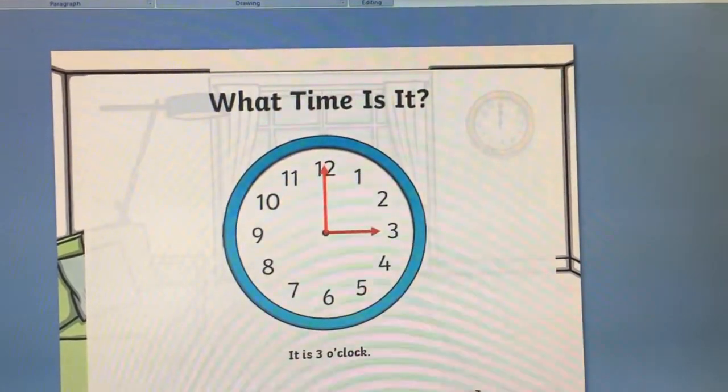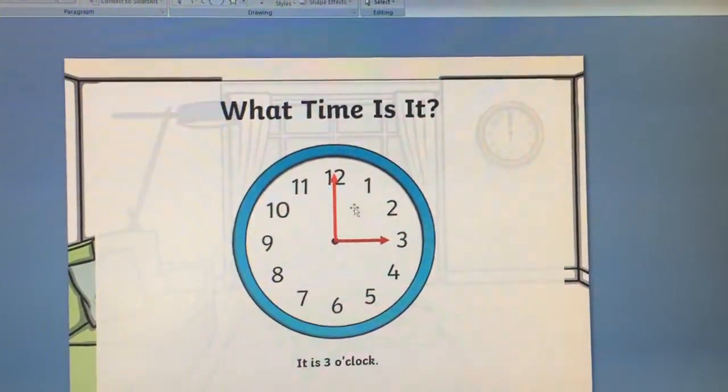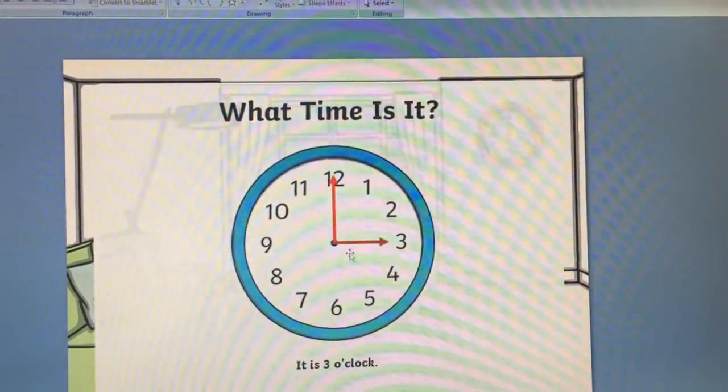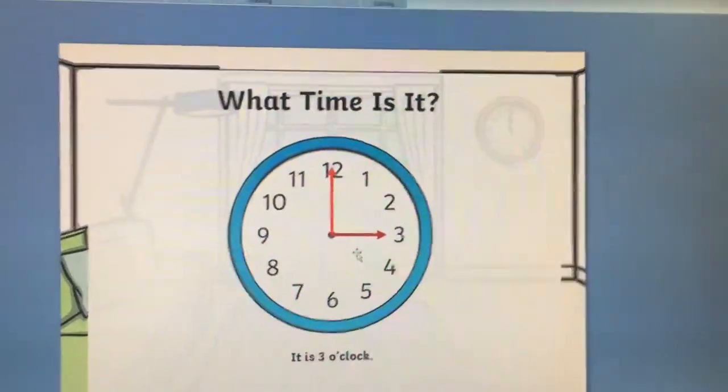Let's do one more. Three o'clock: big hand pointing to 12, small hand pointing to 3.